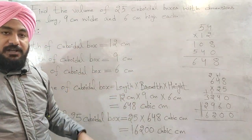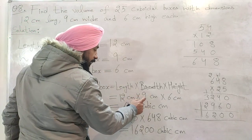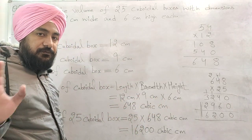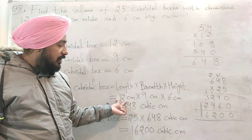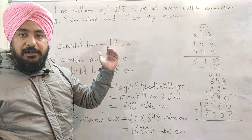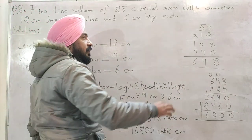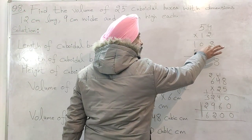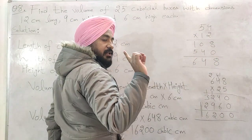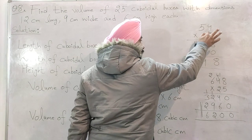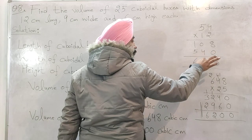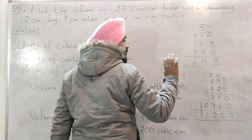Now let's look at the multiplication. 9 × 6 = 54. Then 12 × 54: working through — 2 × 4 = 8, 2 × 5 = 10, carry 1; then 1 × 4 = 4, 1 × 5 = 5; adding: 8 + 0 = 8, 0 + 4 = 4, 1 + 5 = 6. Result is 648.